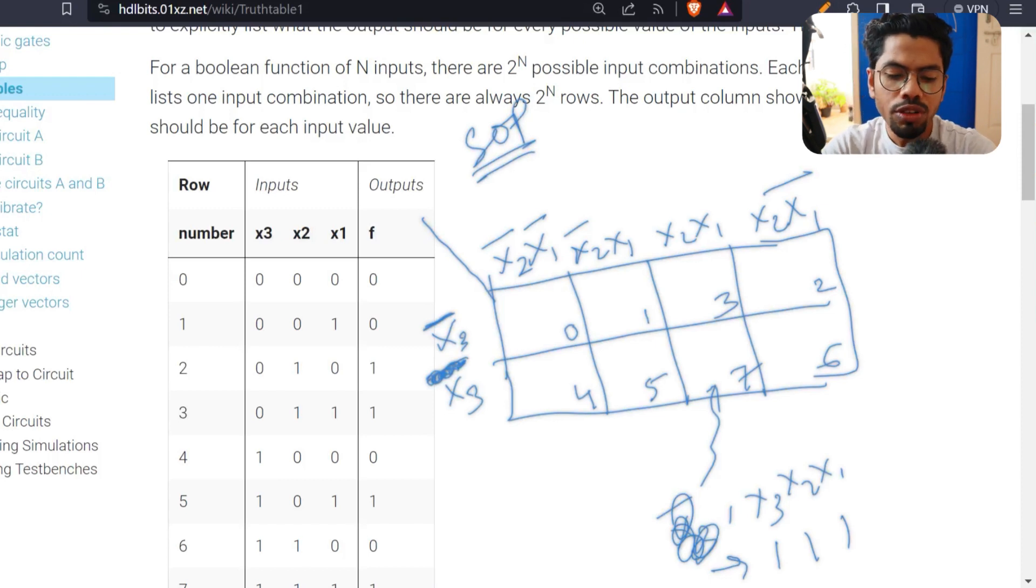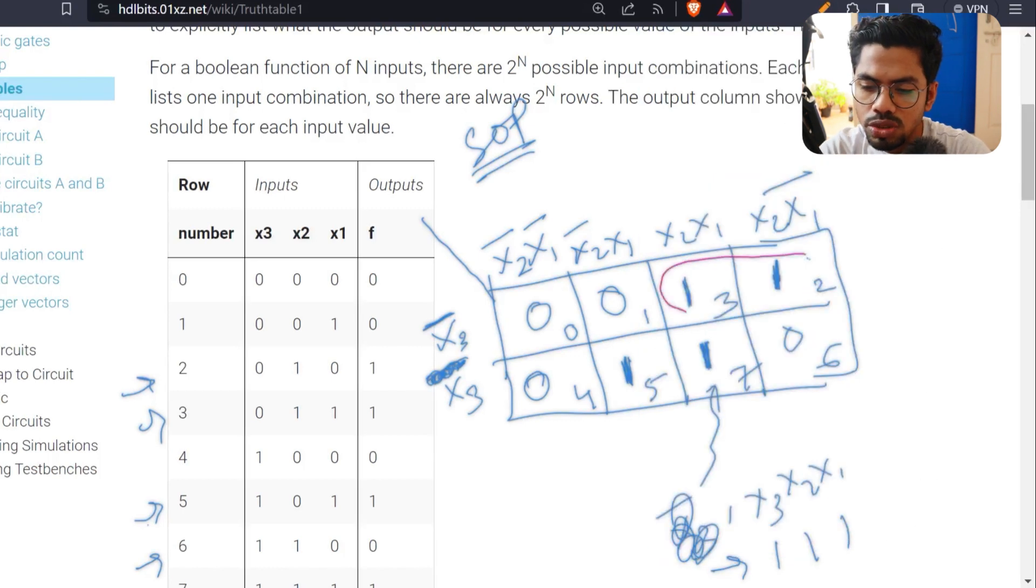Now, we have 1 for which rows? We have for rows 2, 3, 5, and 7. So for 2, 3, 5, and 7, we have inserted the 1. For others, it is 0. Then we need to form our groupings. First we will try for four, then for two, but here four are not possible. So this is one arrangement, this is another arrangement, and we also have an arrangement here, but it is not essential because both of them are already taken by other arrangements.